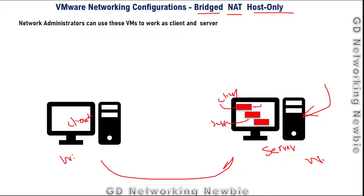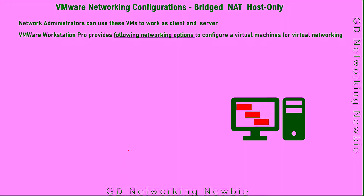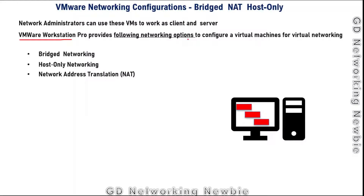If we can create multiple virtual machines on a single host physical computer, we no longer need multiple physical machines. There are many virtualization software options, like VirtualBox, but in this video we will be using VMware Workstation Pro. VMware Workstation Pro provides the following networking options: bridged networking, host-only networking, NAT (Network Address Translation), and custom networking.